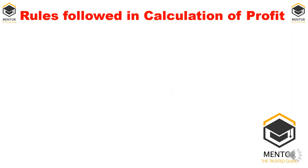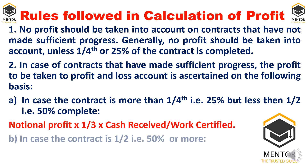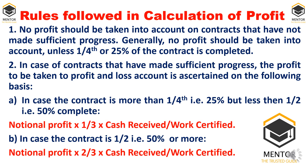When calculating profit, we concentrate on completion of the contract. If the contract is completed below 50 percent, the formula is: notional profit × 1/3 × cash received / work certified. If completed 50 percent and above, the formula is: notional profit × 2/3 × cash received / work certified. The only difference is 1/3 versus 2/3 of the notional profit.